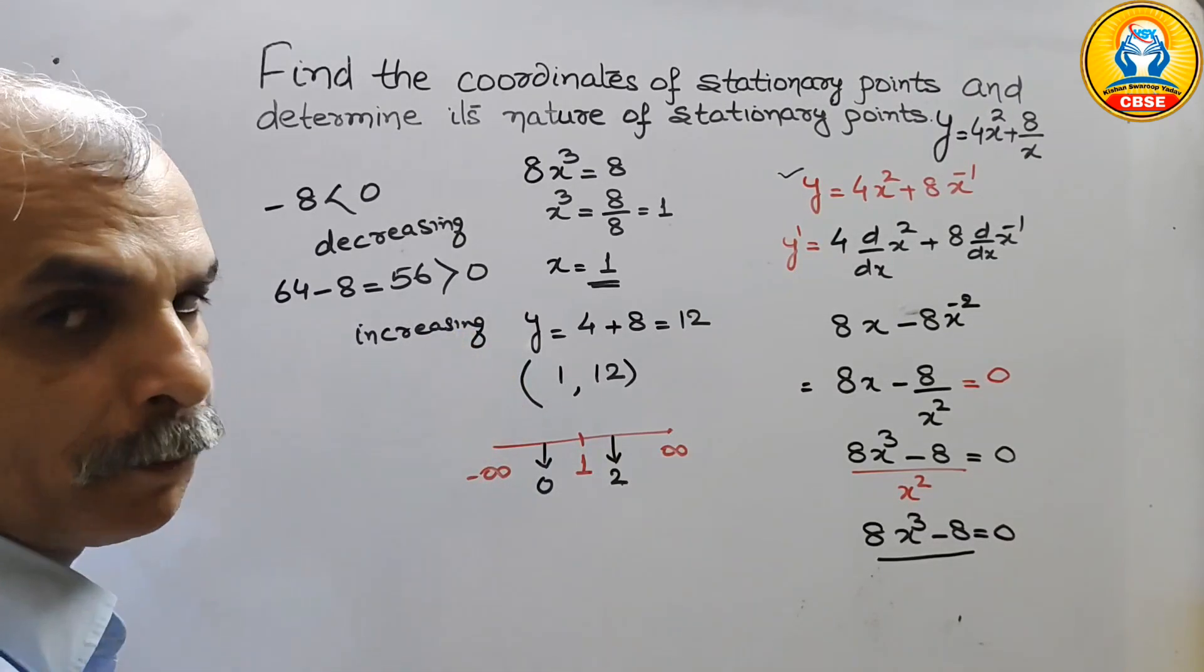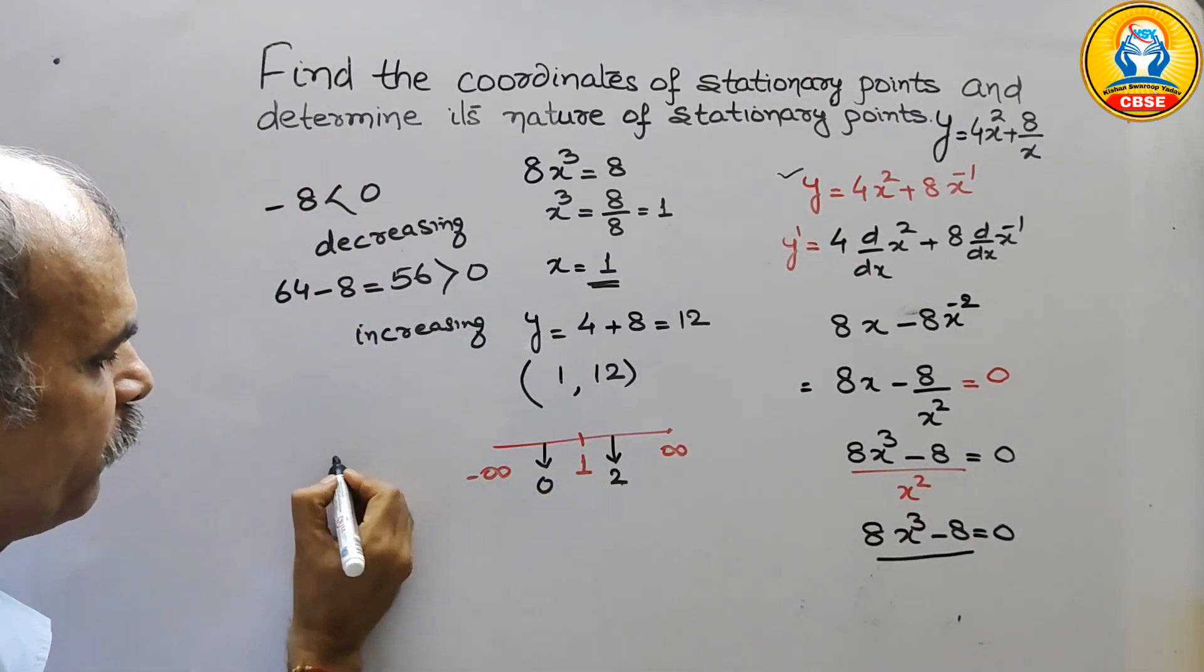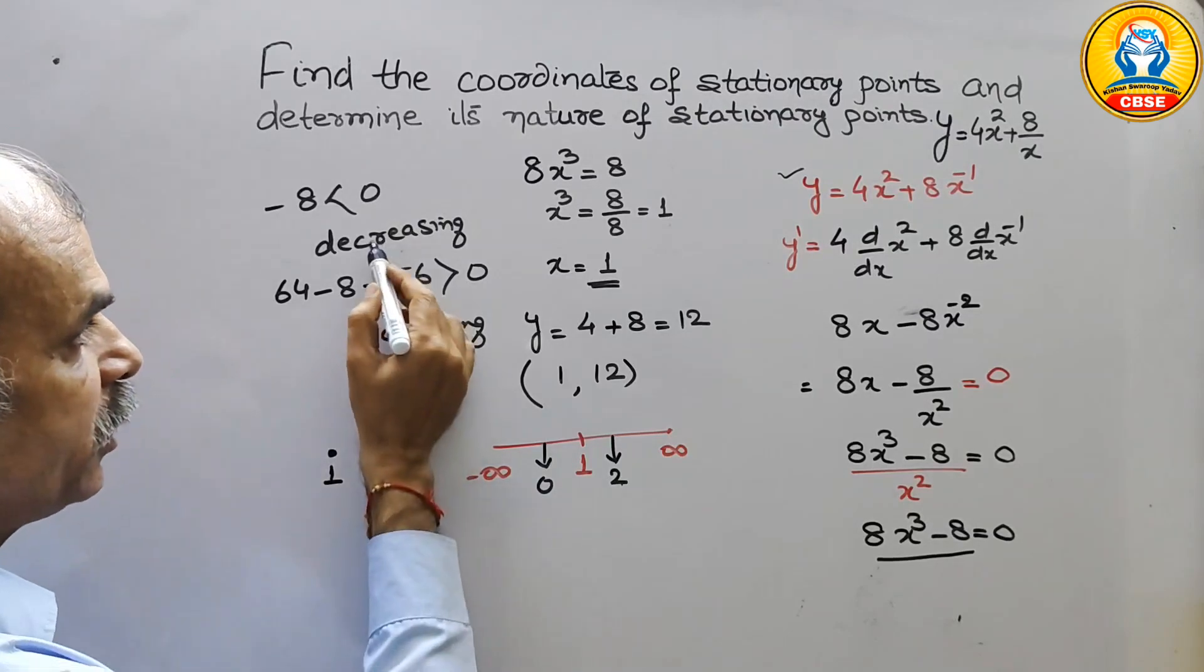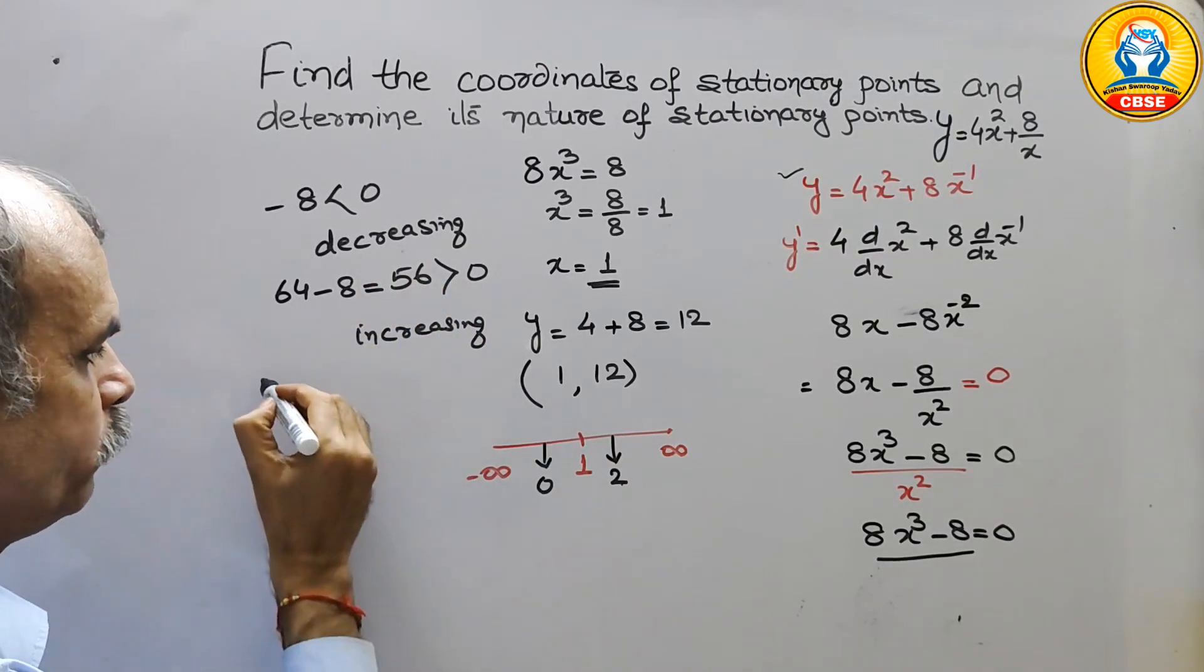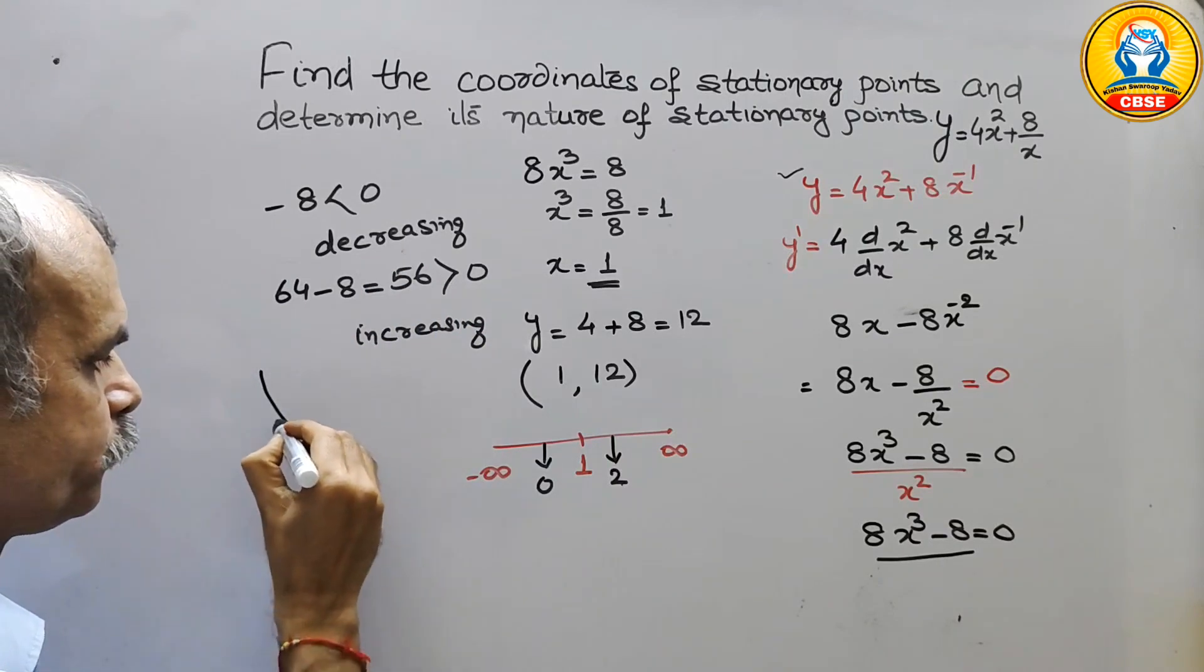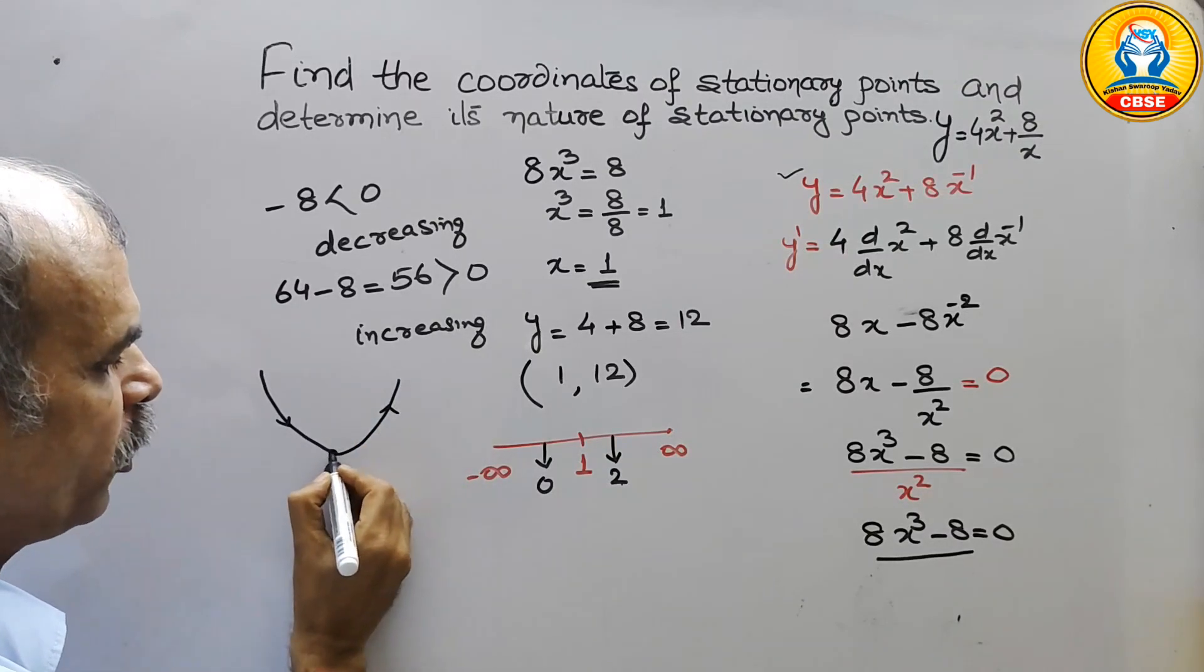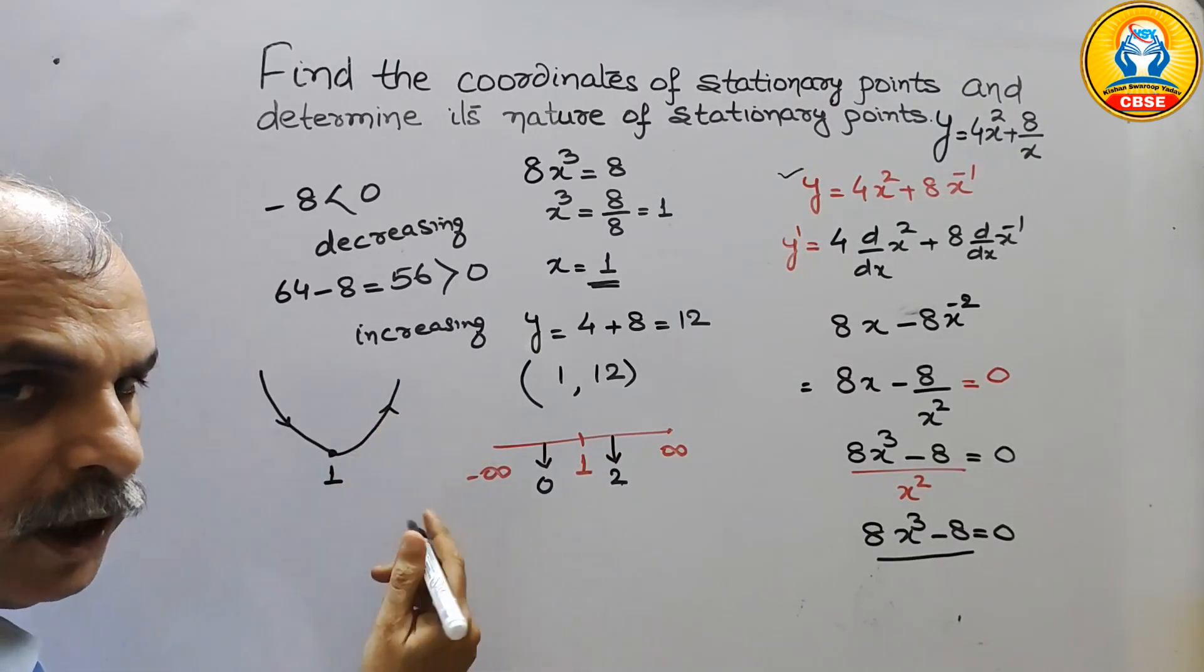So now if you take the point, suppose we have taken this point 1 here, first they have told it is decreasing, that means it is coming from top, it is decreasing. Next it is increasing, so this point we can say this is your minimum point.